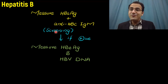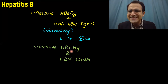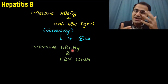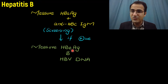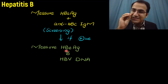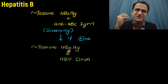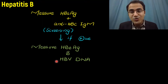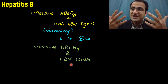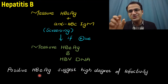If the patient screens positive, further investigation includes measuring hepatitis B E antigen (HBeAg). HBeAg is a protein secreted by hepatocytes when the virus is actively replicating. It indicates the infectious period — a positive HBeAg means the patient is highly infectious. You also look for hepatitis B virus DNA copies in the blood to determine the degree of viral replication. Positive HBeAg suggests a higher degree of infectivity.